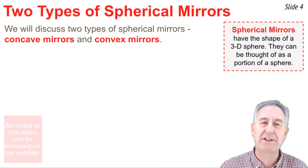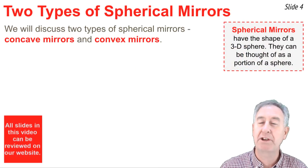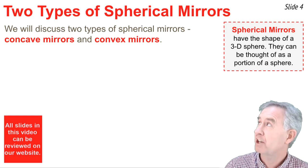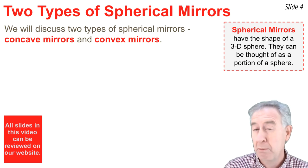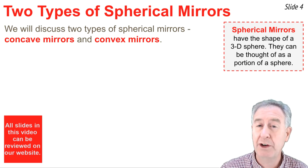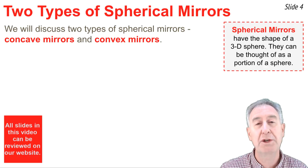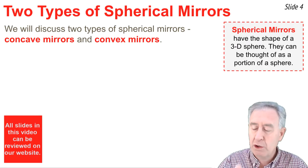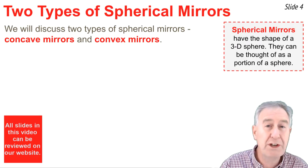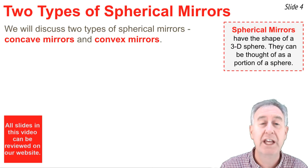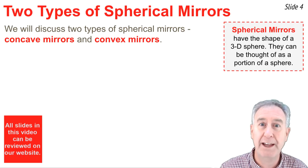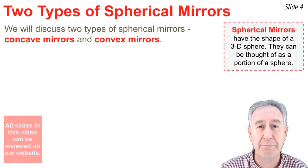We will be discussing two types of curved mirrors: concave mirrors and convex mirrors. Both are examples of what we call a spherical mirror. You can picture it this way — you begin with a sphere, cut off a portion of that sphere, then silver either the inside or outside, and you have a convex or concave mirror.